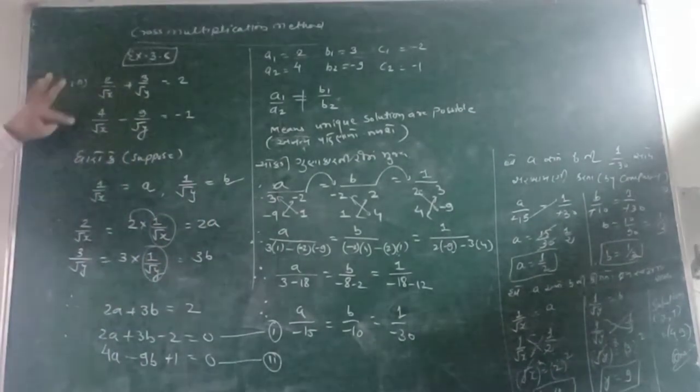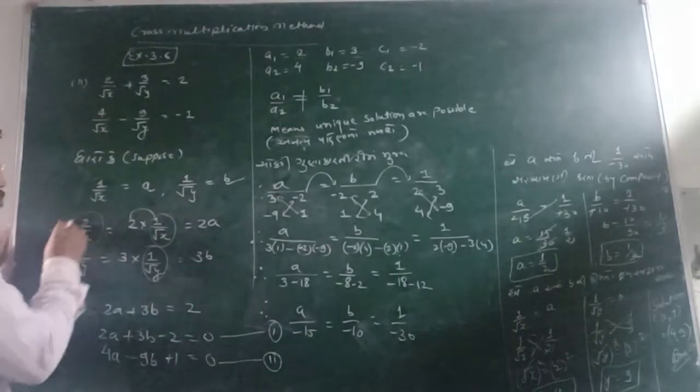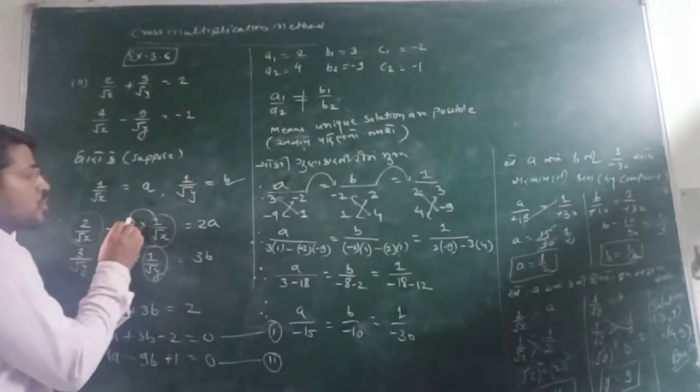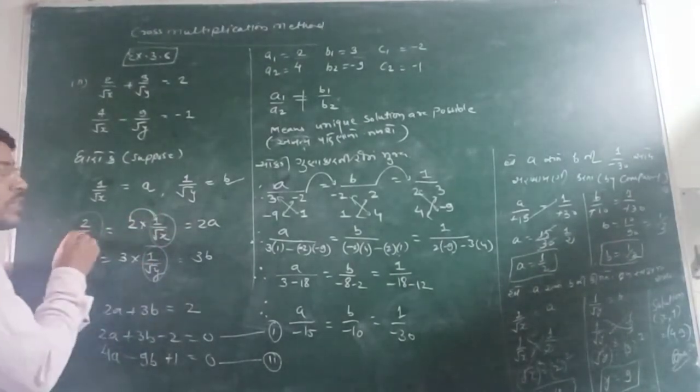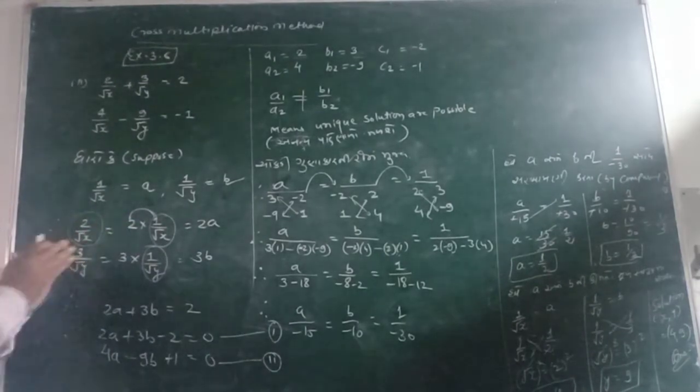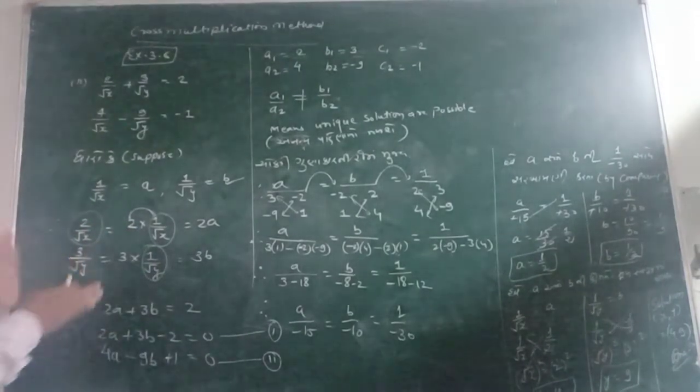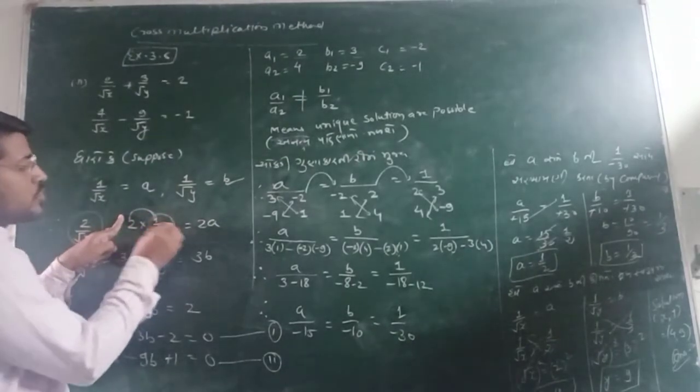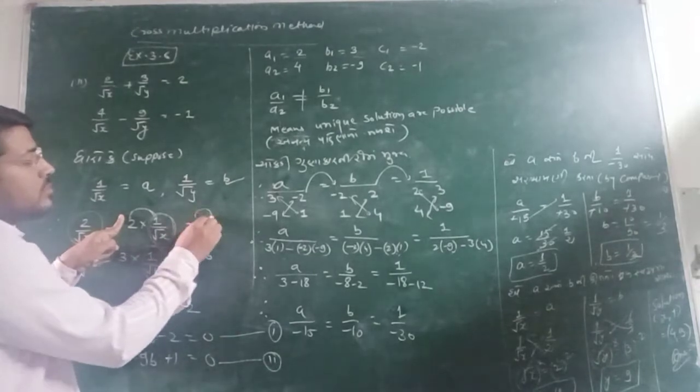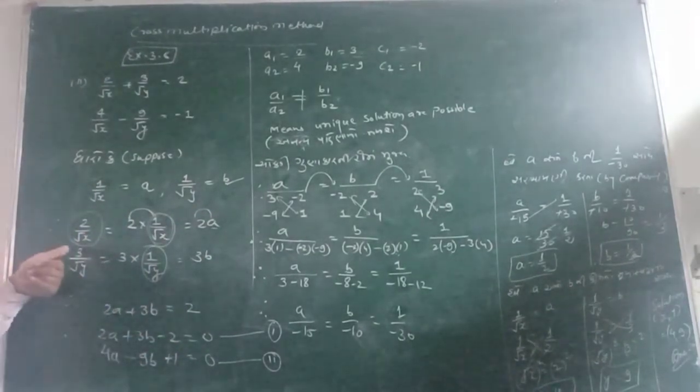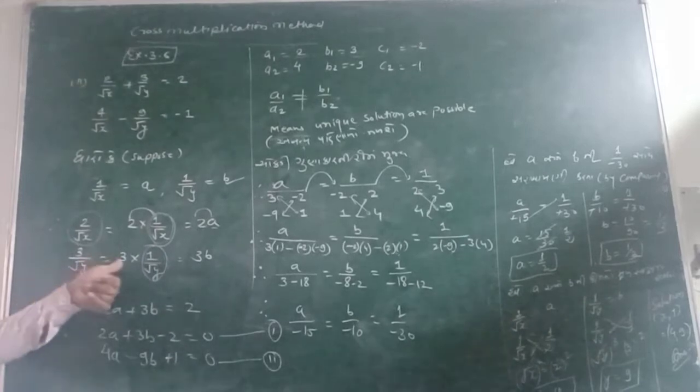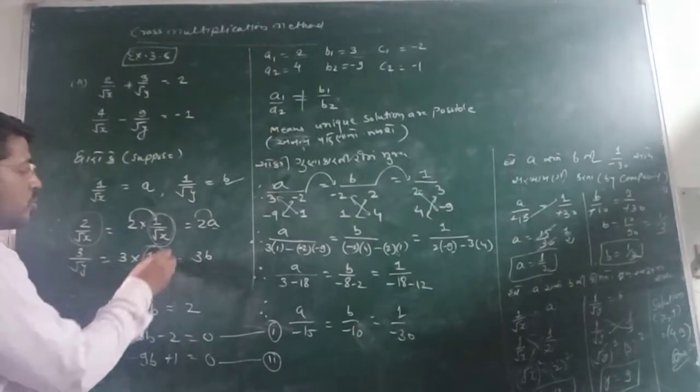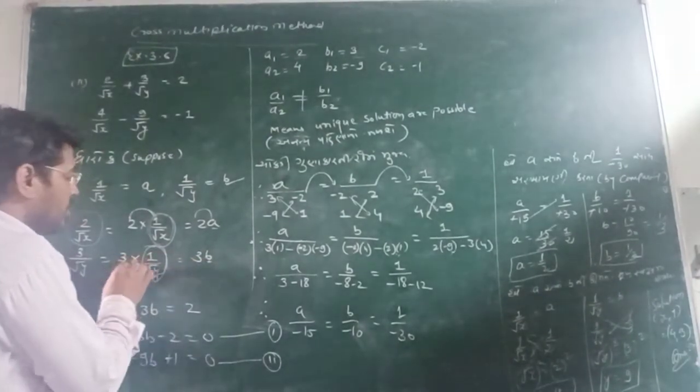We have given 2 upon root x. So, we can write it. 2 upon root x is in the form 2 into 1 upon root x. Because 2 is 2 multiplied by 1, we will get the same result. So, we have just diversified or departed 1 upon root x from 2. So, wherever you see 1 upon root x, you will put a. So, it will become 2a. Similarly, 3 upon root y. So, we have diversified 3 from 1 upon root y. So, wherever you see 1 upon root y, you can see b. So, it will be 3b.